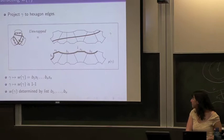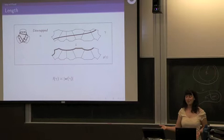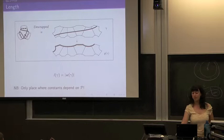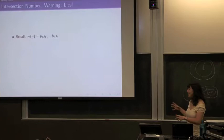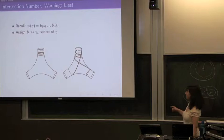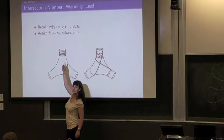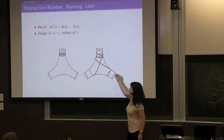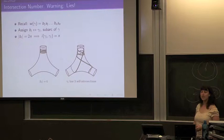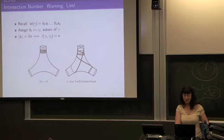Length and intersection numbers have analogs in the word. Length is easy — it should be roughly the word length, and this is the only place where constants depend on the geometry. Everything else is really topological. Intersection numbers are where things get tricky and a bit technical, so I'll give the cartoon.